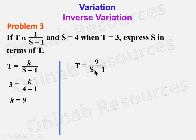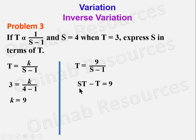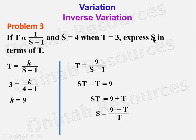We have to express s in terms of t, meaning we make s the subject of the formula. Cross-multiplying gives t(s − 1) = 9, so st − t = 9. Taking t to the right-hand side leaves st = 9 + t. Dividing both sides by t gives s = (9 + t)/t, and that is the expression for s in terms of t.